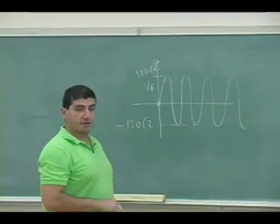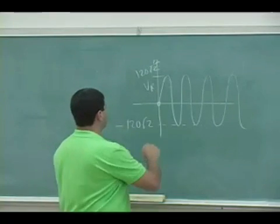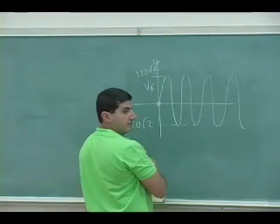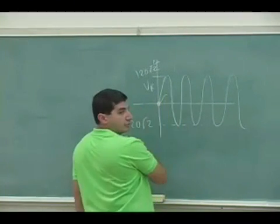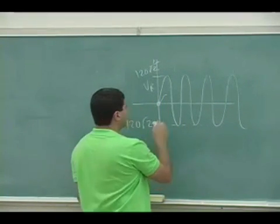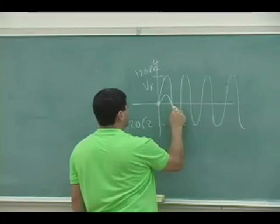And the current looks like what? Well, current is simply V_R over R, so it's just in phase except it has a less amplitude - it's 1.2, right? So it's got less amplitude, it's like this.